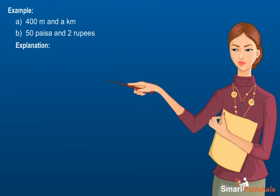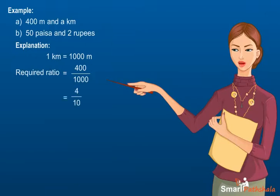One kilometer is equal to 1000 meter. Now required ratio is equal to 400 meter divided by 1000 meter. So the ratio is 400 by 1000 which is equal to 2 is to 5.